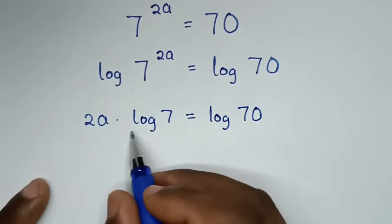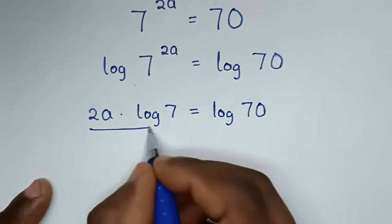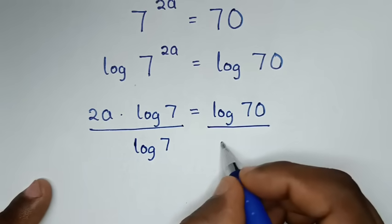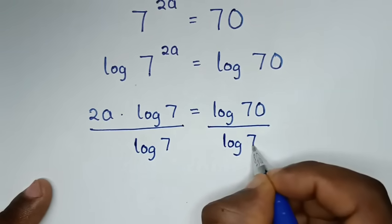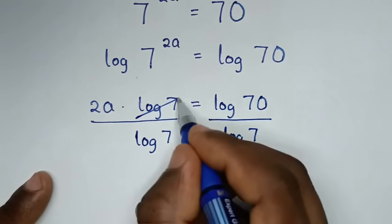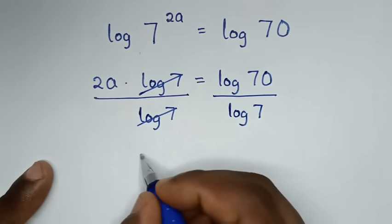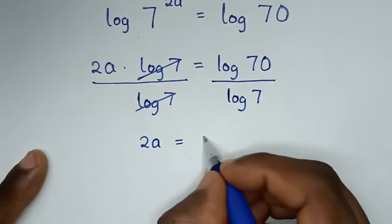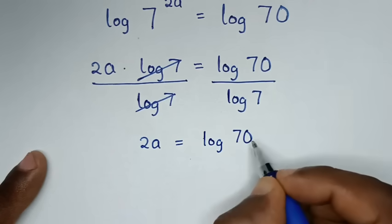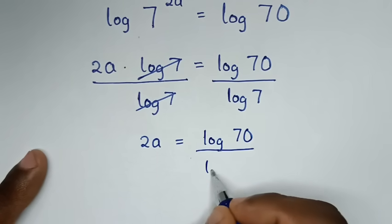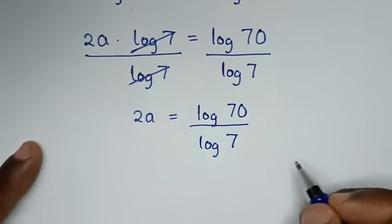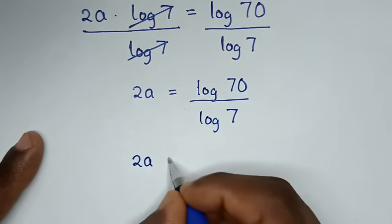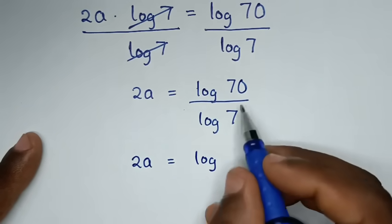Then we will divide by log of 7 on both sides — over log of 7 on this side and over log of 7 on that side. In the next step, it will be 2A is equal to log of 70 over log of 7.